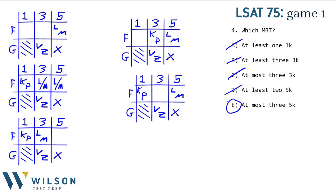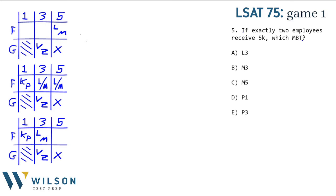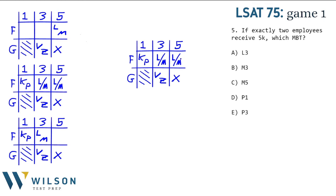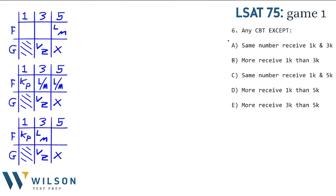Question five says: if exactly two employees receive $5,000 bonuses, which must be true? World two is the only one with exactly two employees getting $5,000, but we don't know exactly which of L or M is at $5,000 versus $3,000. Nothing is forced about L and M individually, but P must get the $1,000 bonus. So answer D — P gets $1,000 — is the only correct answer.